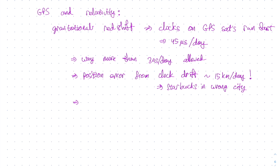This, of course, cannot be allowed to happen, and therefore when atomic clocks are built for GPS satellites, they are intentionally designed to run a little bit slow in order to compensate for this 45 microsecond per day drift.